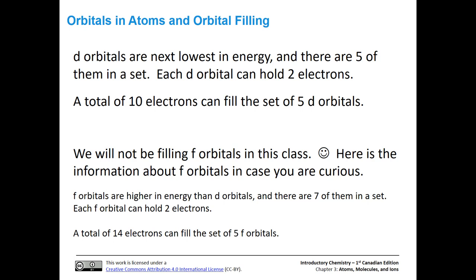We're not going to be filling f orbitals in this class, but just so you know: f orbitals are even higher in energy than d orbitals. There are seven of them, and we can put 14 electrons total into those f orbitals. But again, we won't be filling f orbitals in this course.